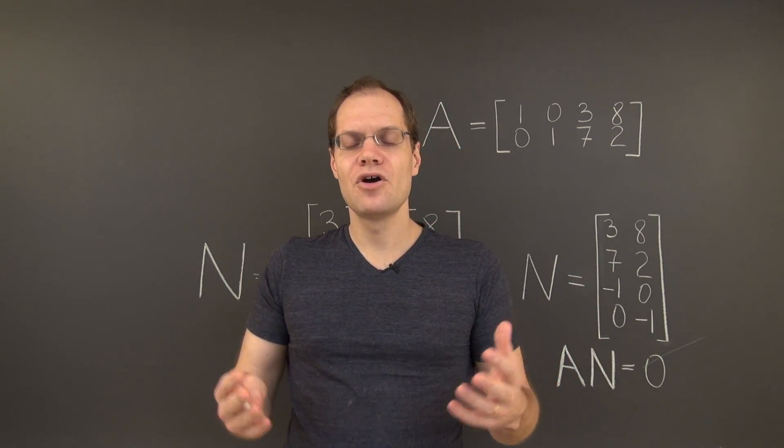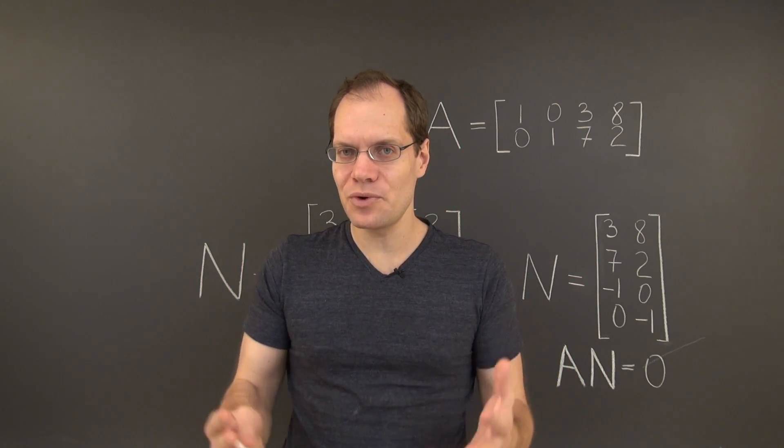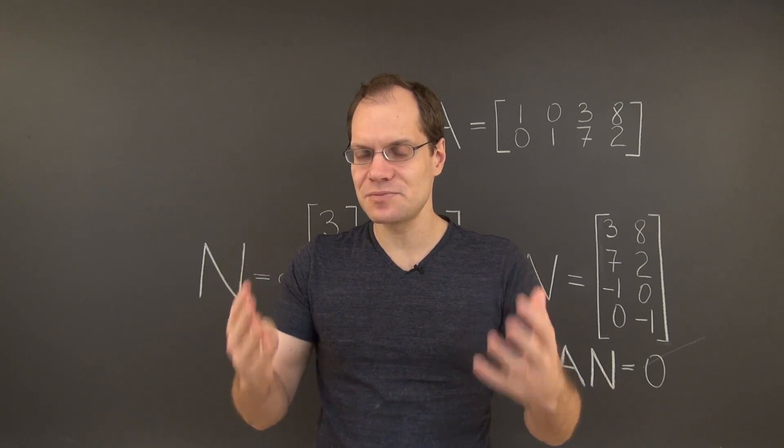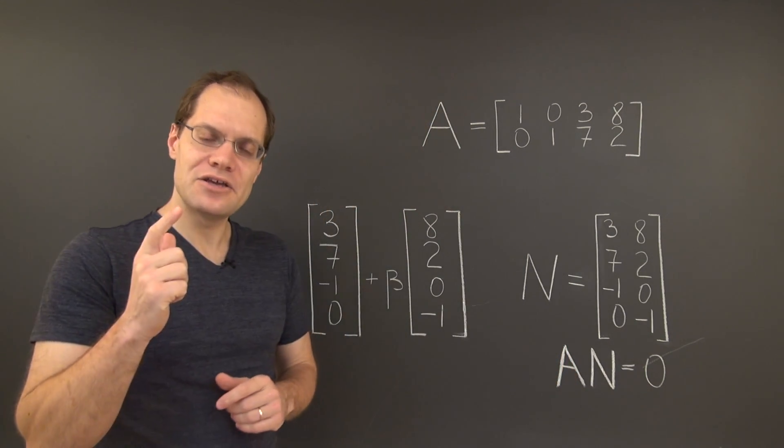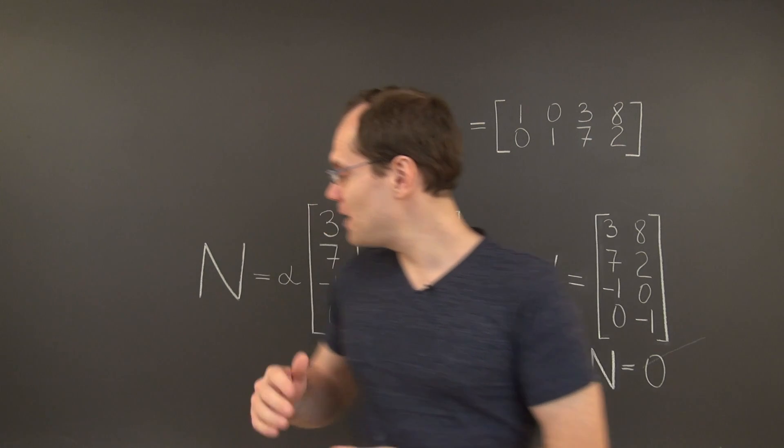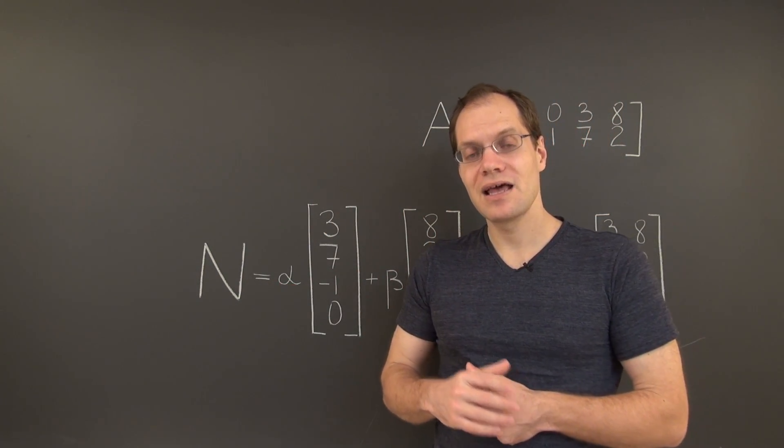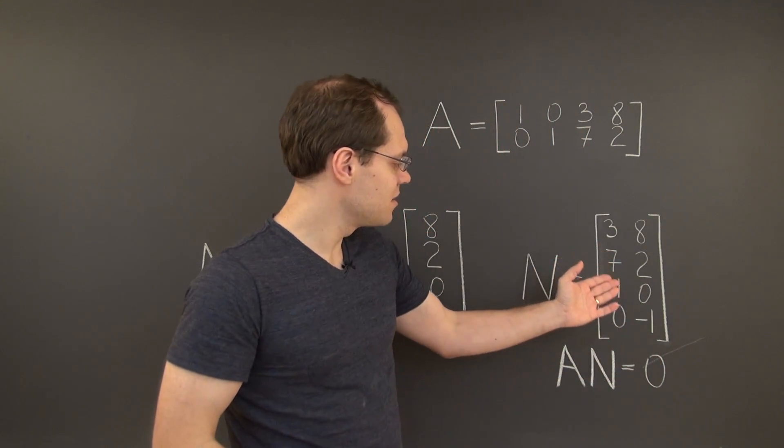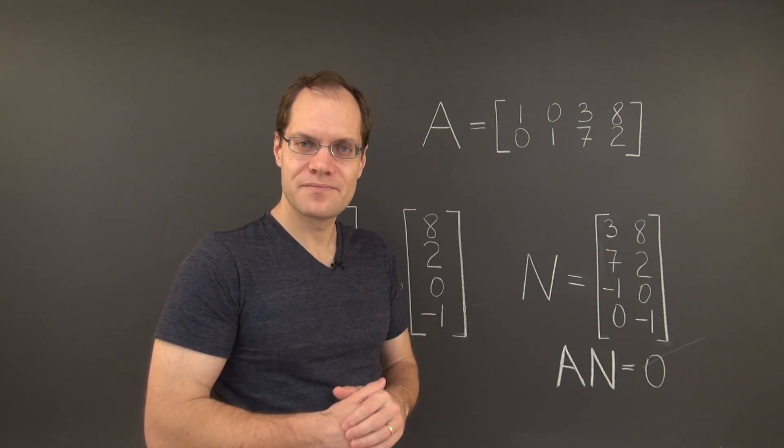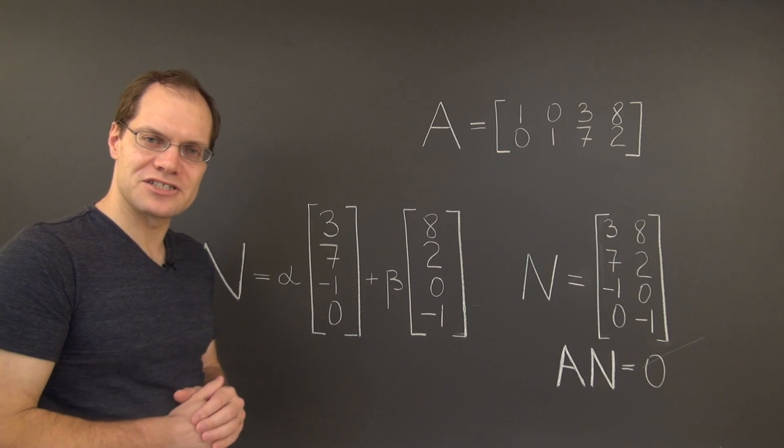We're looking for a matrix algebraic way of reconciling these expressions. More specifically, can you think of a way of combining the letters alpha and beta into a matrix and then multiplying this matrix by this one in a way that would recover this expression.